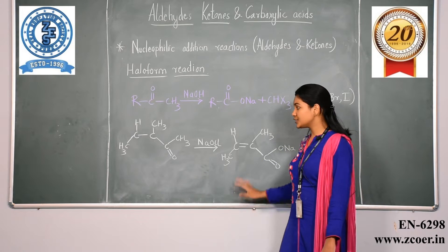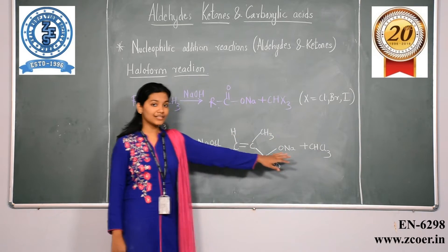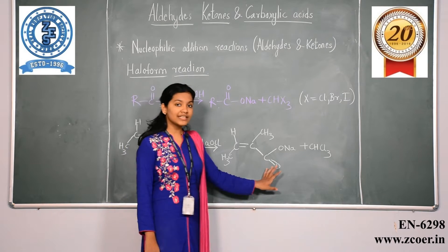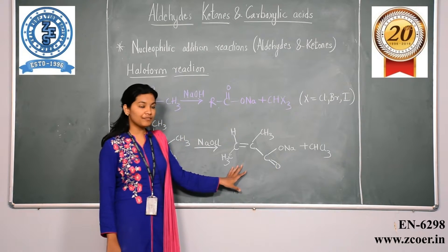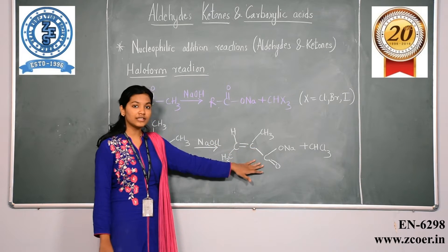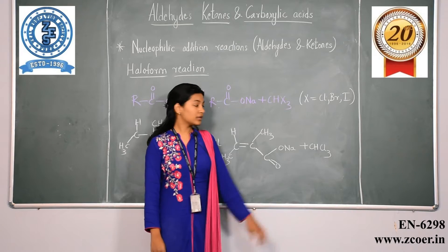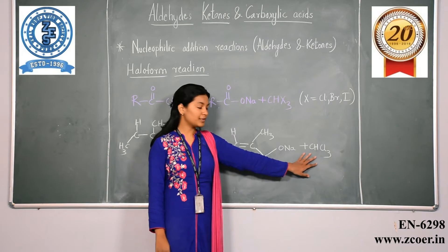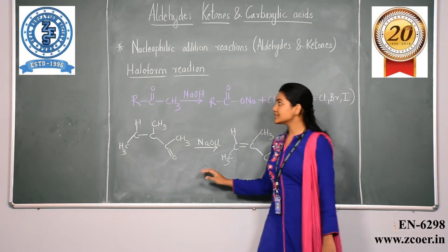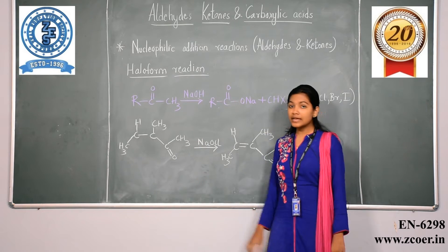The oxidation does not affect the double bond present in the structure. The methyl group is converted into the haloform, and hence this reaction is called the haloform reaction. An example given shows the formation of CHCl3 as the end product.